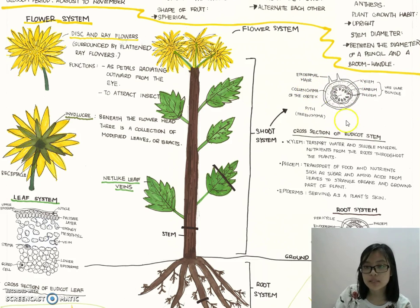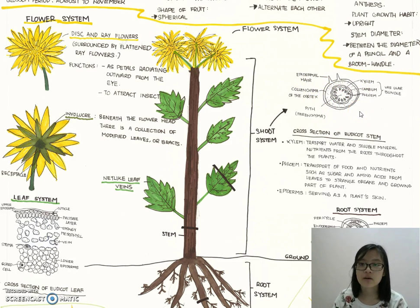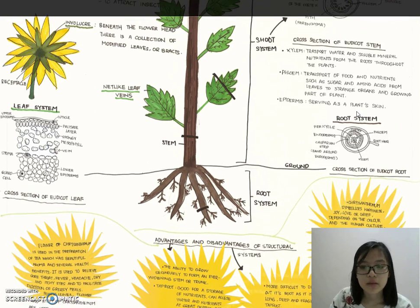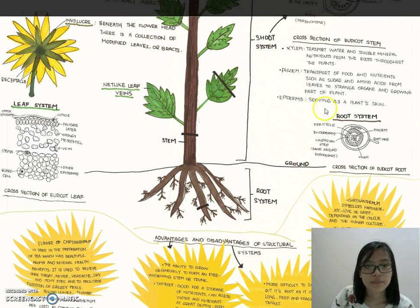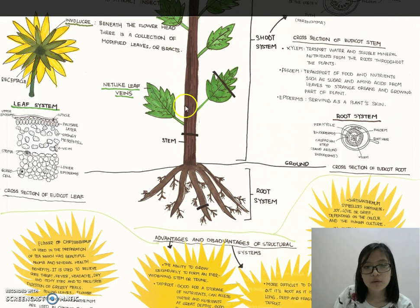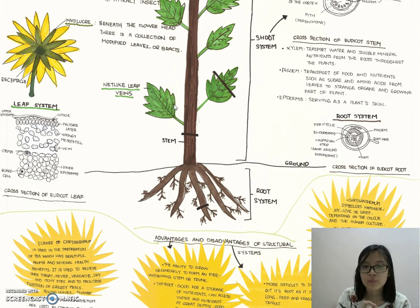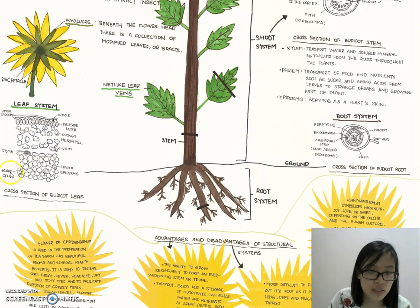The epidermis is the outer skin of the shoot system of the stem. For the leaf system, the chrysanthemum leaf is shaped like net-like veins. This is a cross-section of a eudicot leaf.